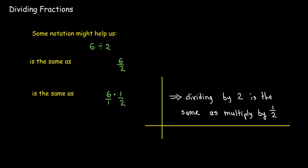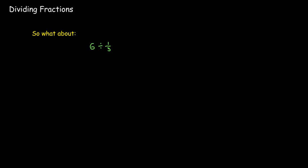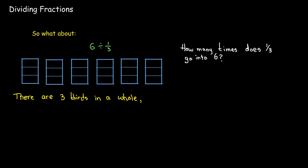And what if I take 6 and divide it by 1 third? Really, that says how many 1 thirds are in 6 wholes? And so here are 6 wholes divided up into thirds. And how many thirds are there? Well, 3 in each whole, there's 6 of them all together, so there's 18.